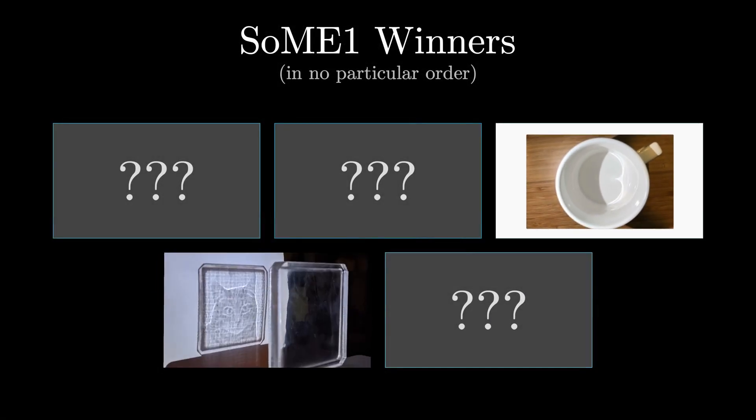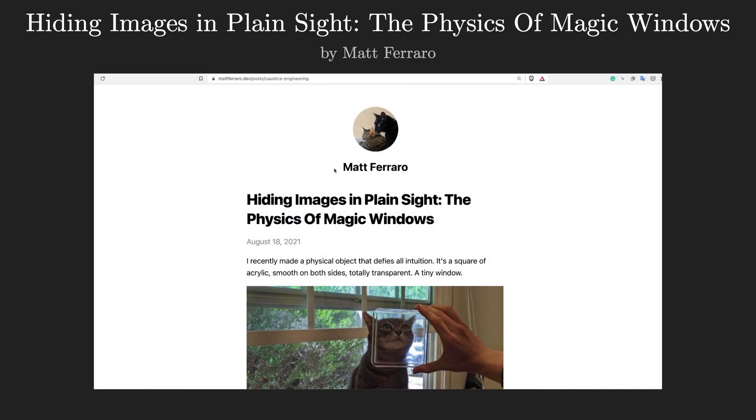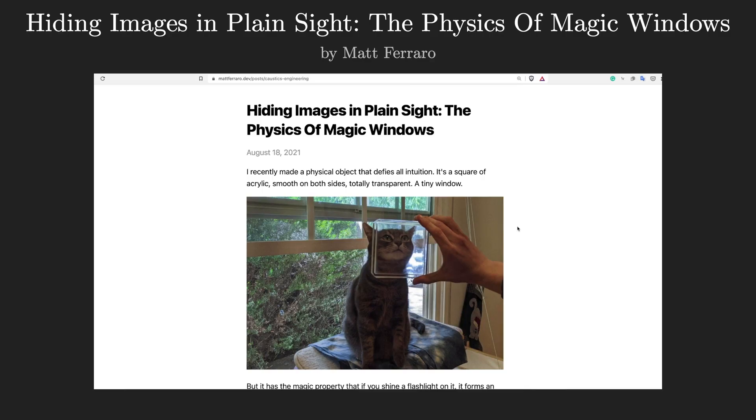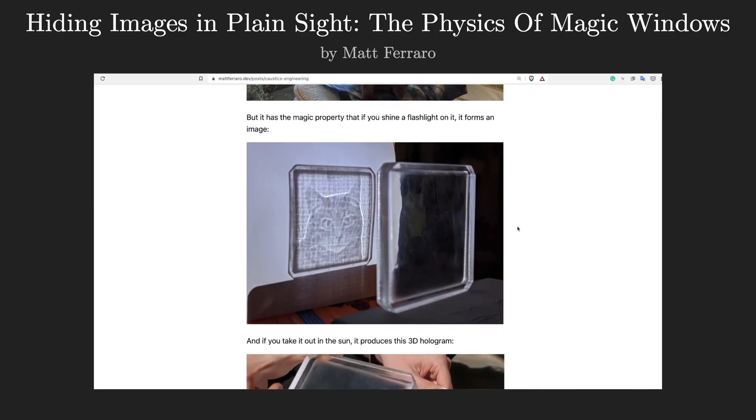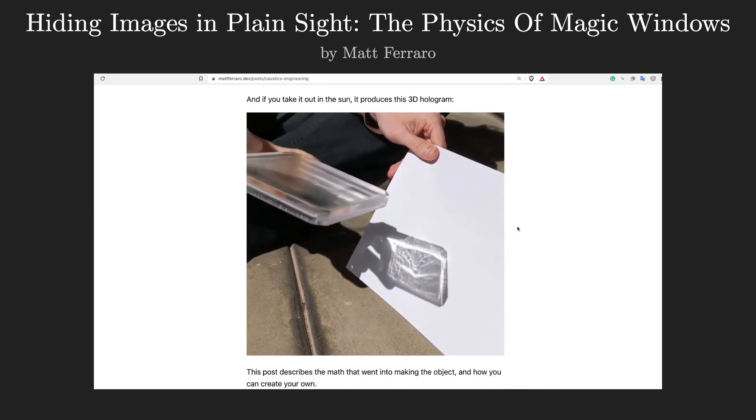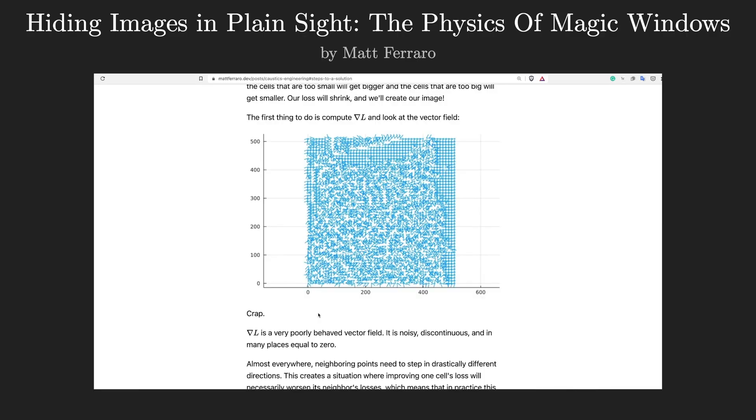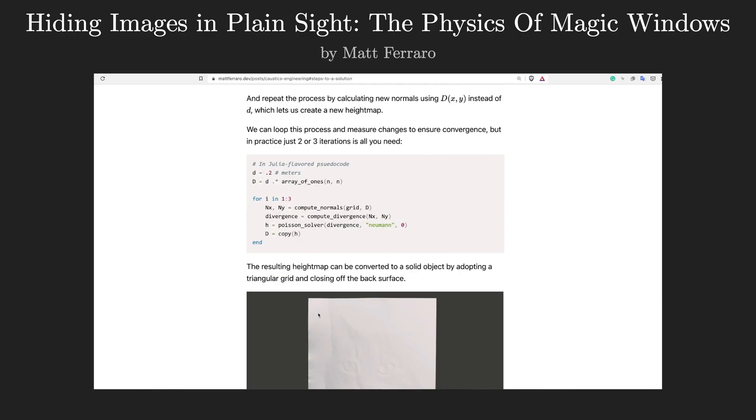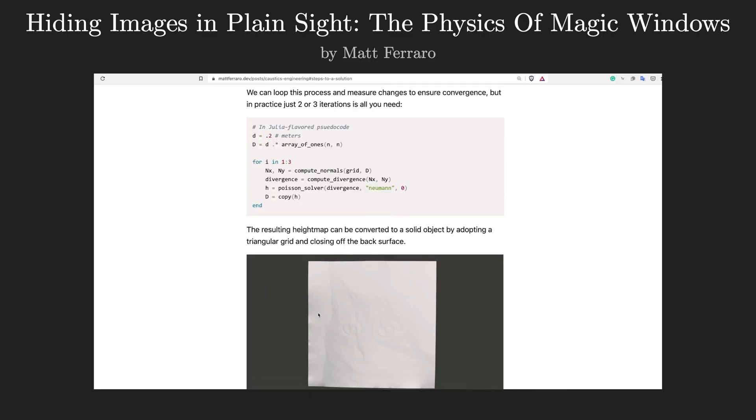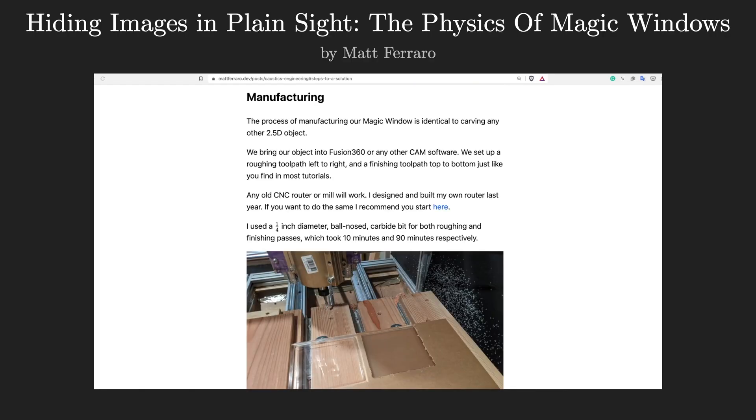On the topic of fun ways that light gets redirected, another one of my picks is just an absolutely mind-blowing piece of engineering wizardry. This one is a blog post written by Matt Ferraro, where he explains how he made this acrylic square that's been carefully crafted to redirect light in such a way as to form a highly deliberate image. The post walks through all of the math and the algorithms involved, including certain false starts in the discovery process, which I love.